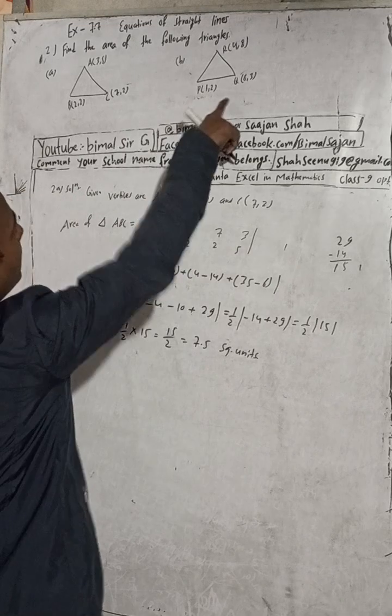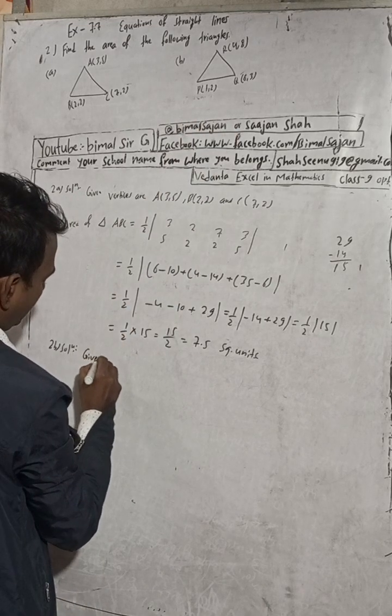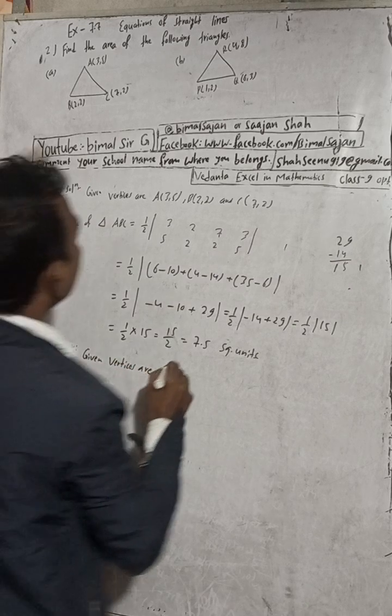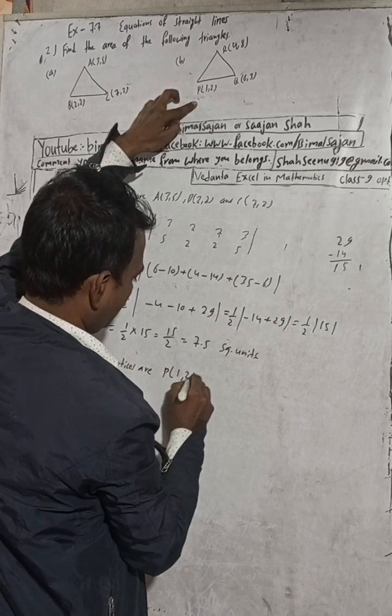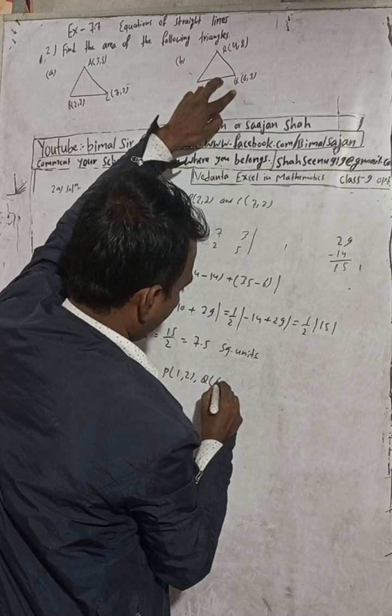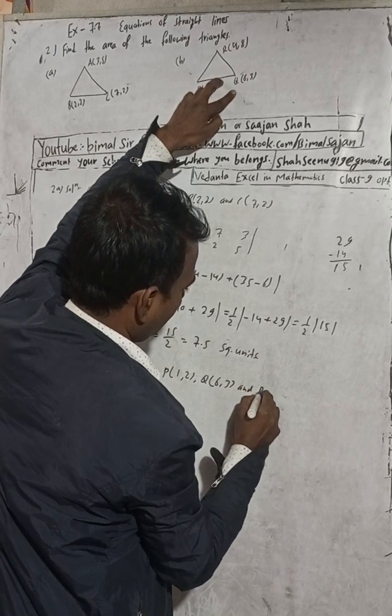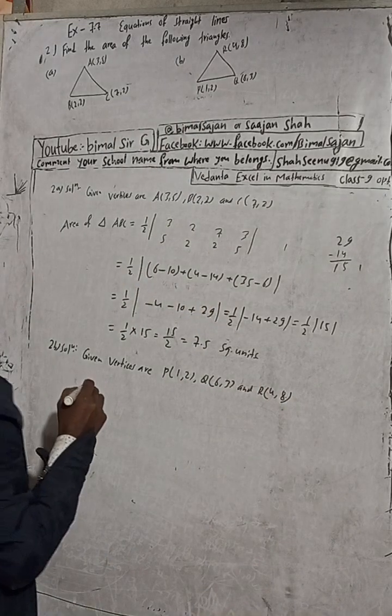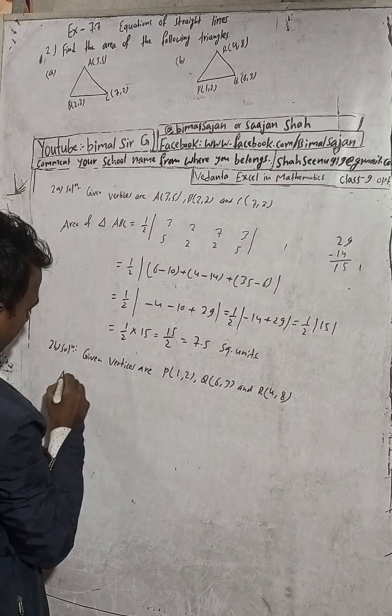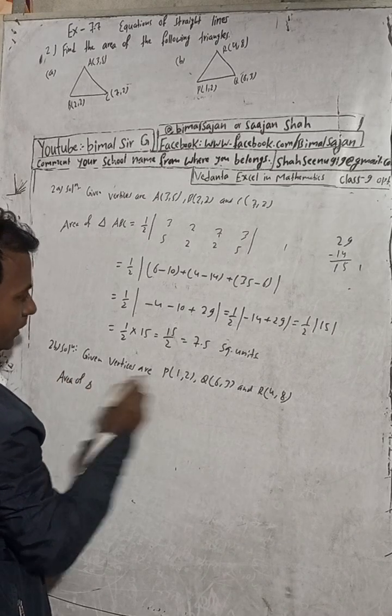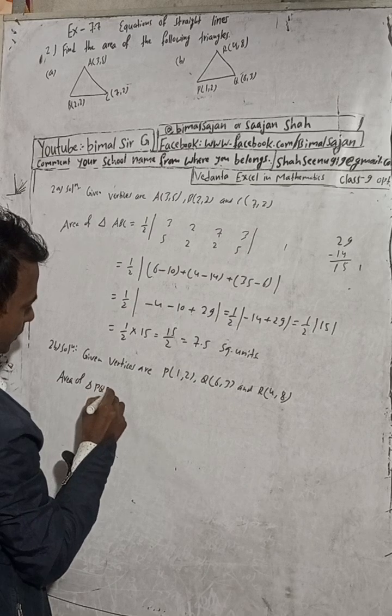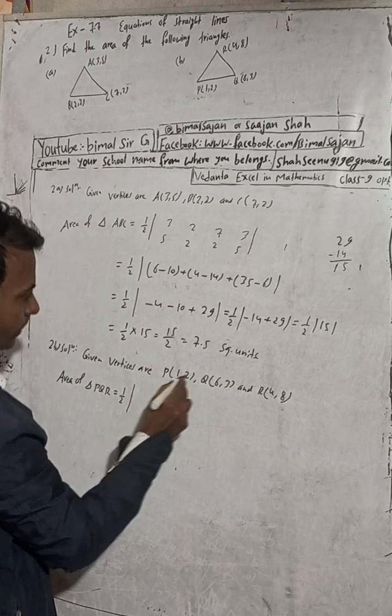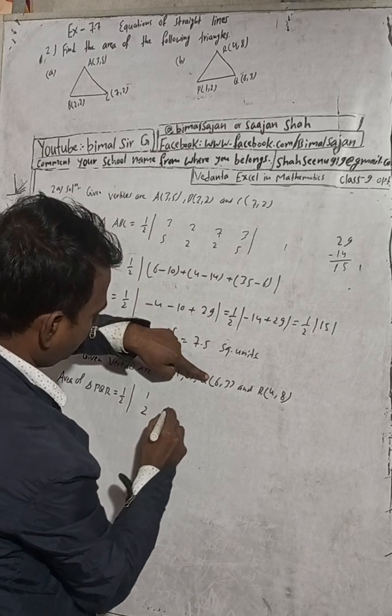Now for the second solution: given vertices are P(1,2), Q(6,3), and R(4,8). So the area of triangle PQR is equal to 1/2 modulus: 1, 2; 6, 3; 4, 8; and repeat 1, 2.